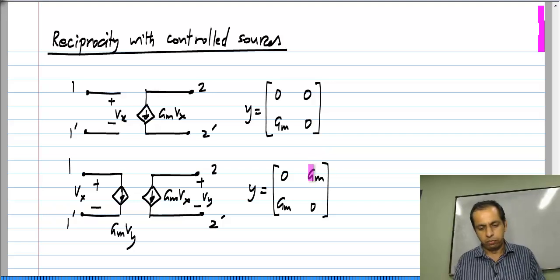So clearly, Y12 equals Y21, and this is a reciprocal network that consists of controlled sources, and you can also have resistors and so on. So you can always arrange a circuit with controlled sources to be reciprocal.